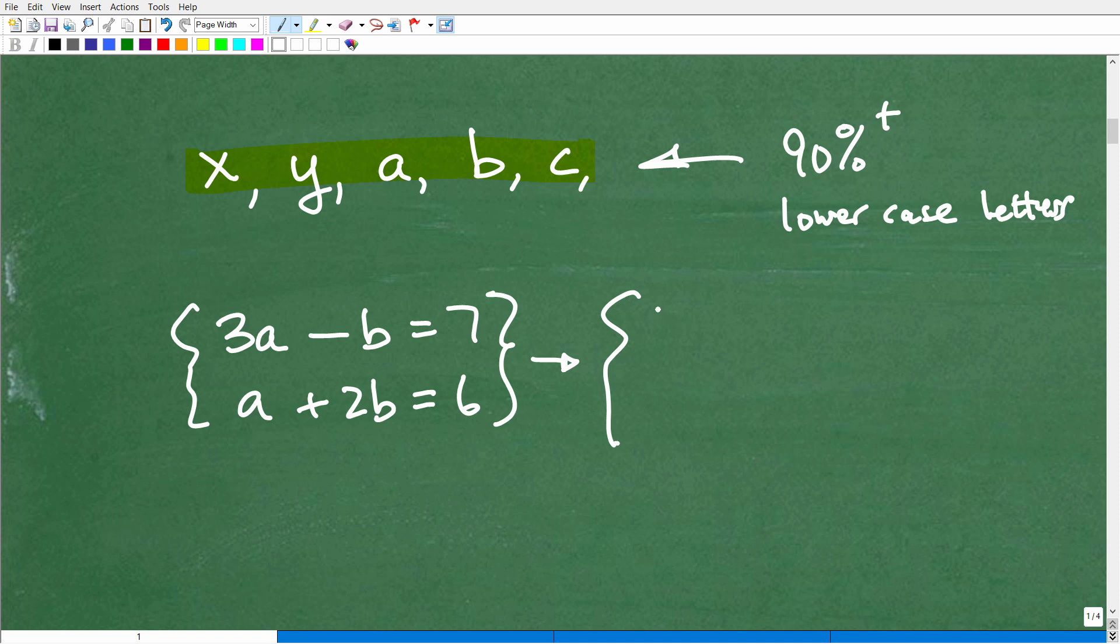It wouldn't be appropriate to write 3A minus B is equal to 7, and A plus 2B is equal to 6. So if you like to write your letters as uppercase, well, this is not good. Well, it's not exactly the end of the world either, but just so you know, by convention,